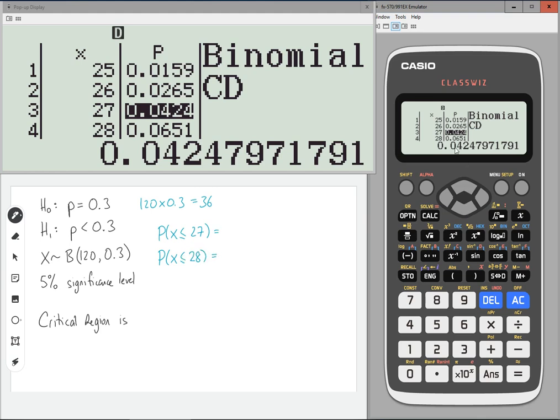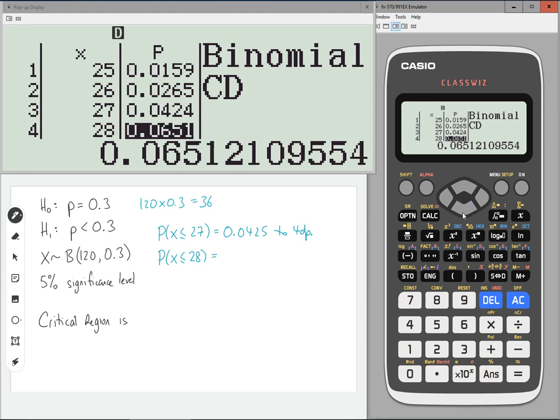Now 27. You must make sure you round this correctly to four decimal places and not just write down the value in the table. 0.0425 to four decimal places. Otherwise you could lose accuracy marks. Then 28, 0.0651 to four decimal places.